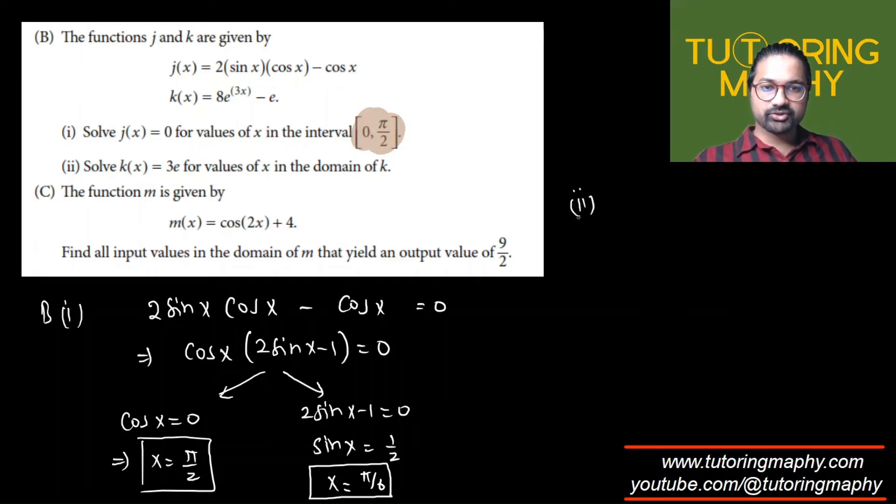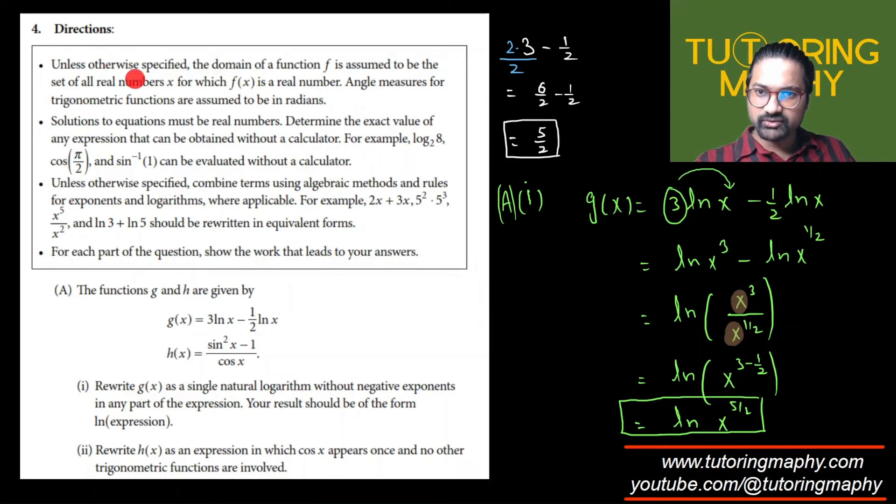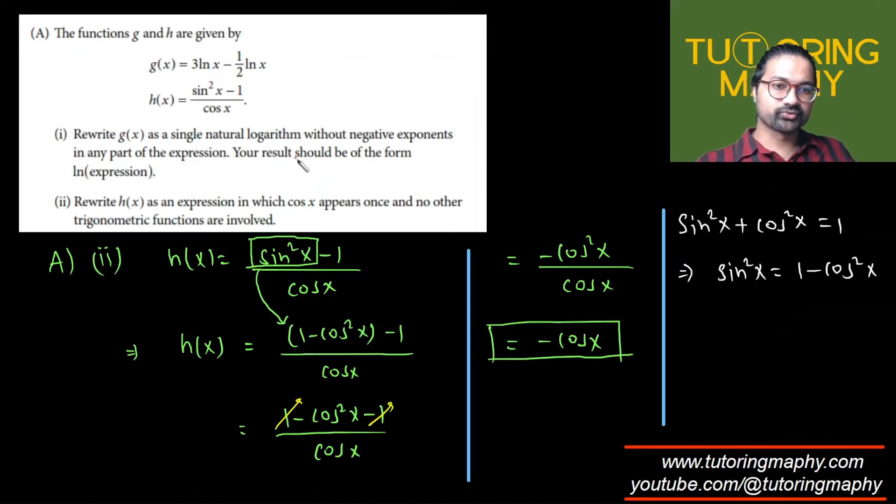Now if we talk about part 2, it says we have to solve for when k(x) = 3e. So k(x) = 3e would mean that 8e^(3x) - e = 3e. Adding e both sides we have 8e^(3x) = 4e. I think I can just divide both sides with 8, so e^(3x) = 4e/8. I believe I need to use a calculator here. I think they need the exact value, that was in the instructions. So exact value can be obtained without using a calculator, so we won't use a calculator.